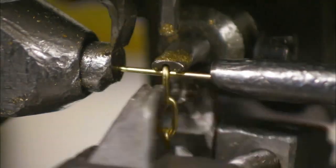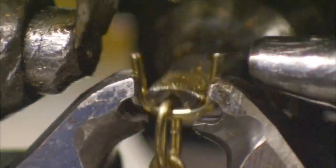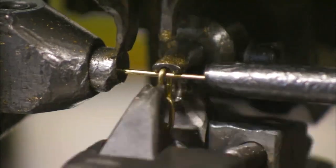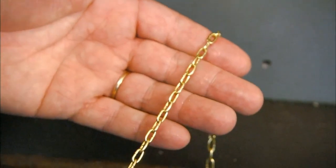Every cuckoo clock has two chains that regulate the speed at which the movement gears turn. As we see here in slow motion, an automated machine makes these chains one link at a time by first cutting, then bending pieces of brass wire.